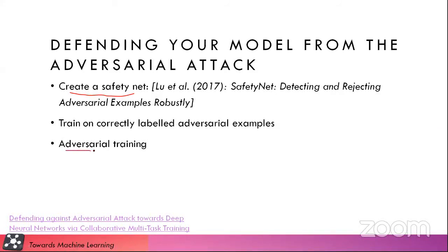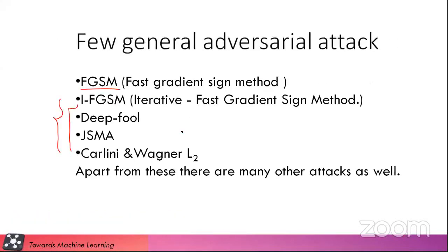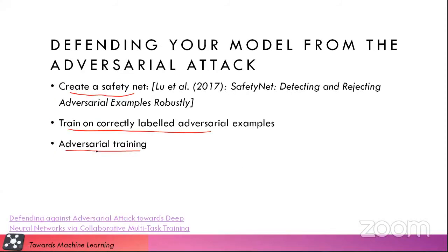The third is adversarial training. This method is very costly — you need to generate a lot of adversarial examples, then label them, then train on them. In adversarial training, whenever you are training your neural network, you are simultaneously creating adversarial examples using different techniques. For example, if you are using FGSM, at the same time you use FGSM to create adversarial images and train your network on them. This is pretty favorable, and it depends on the type of attack as well.